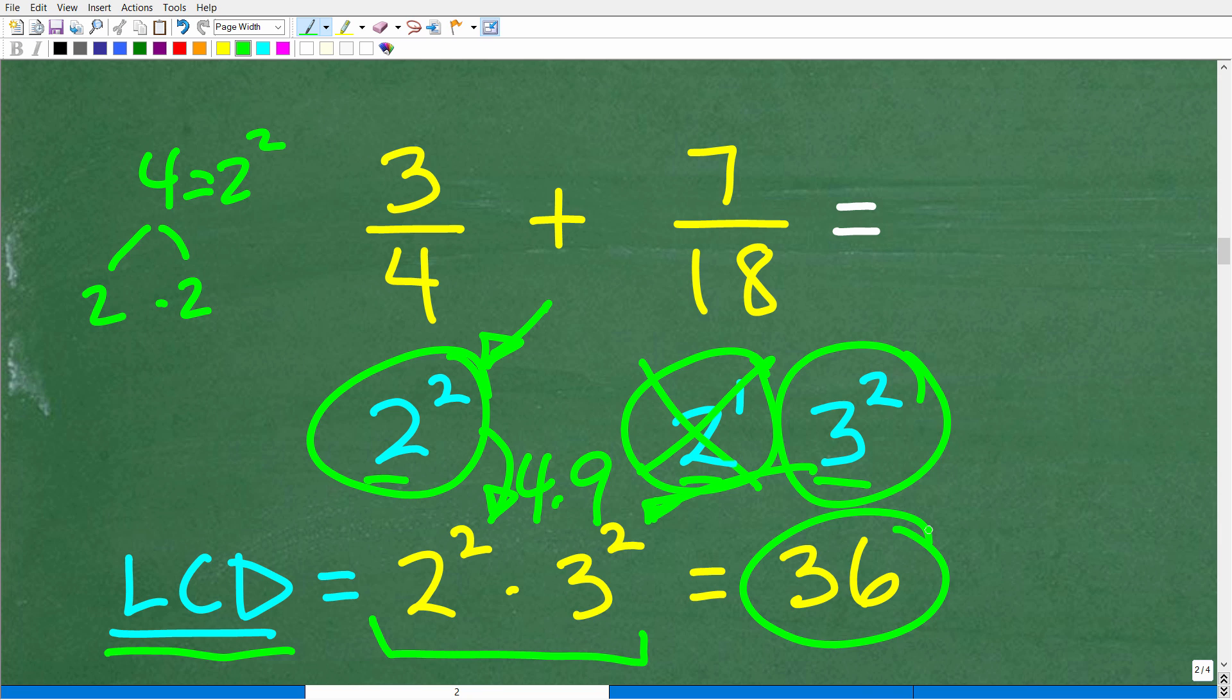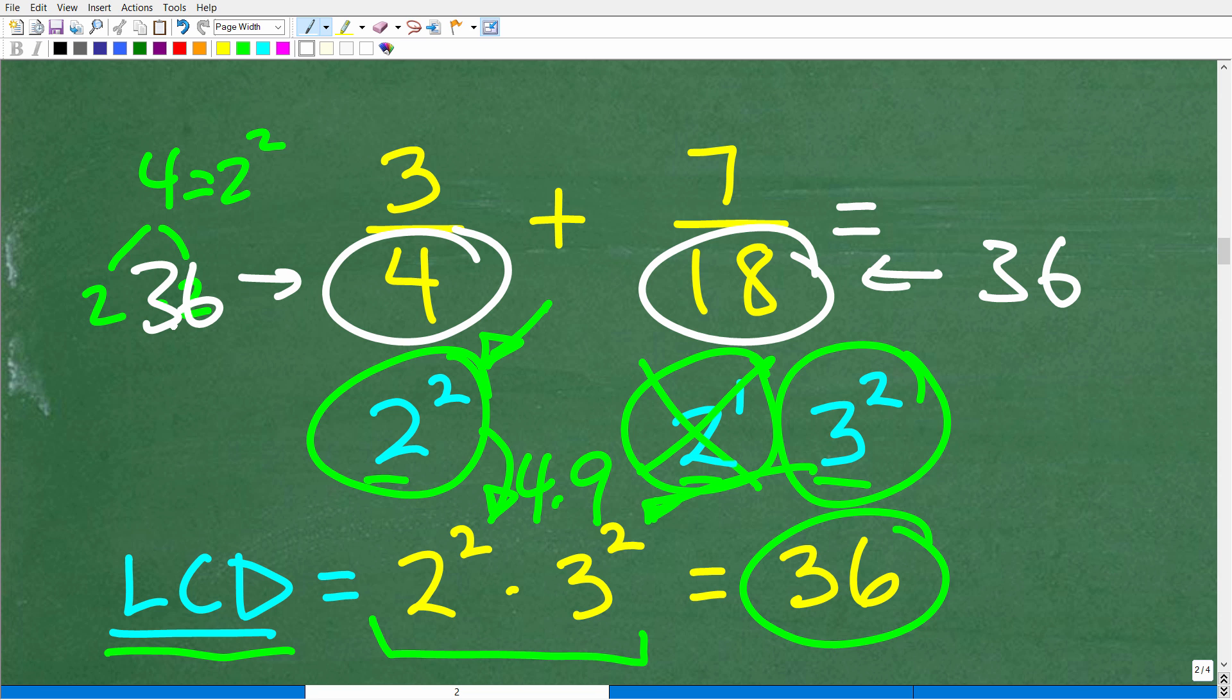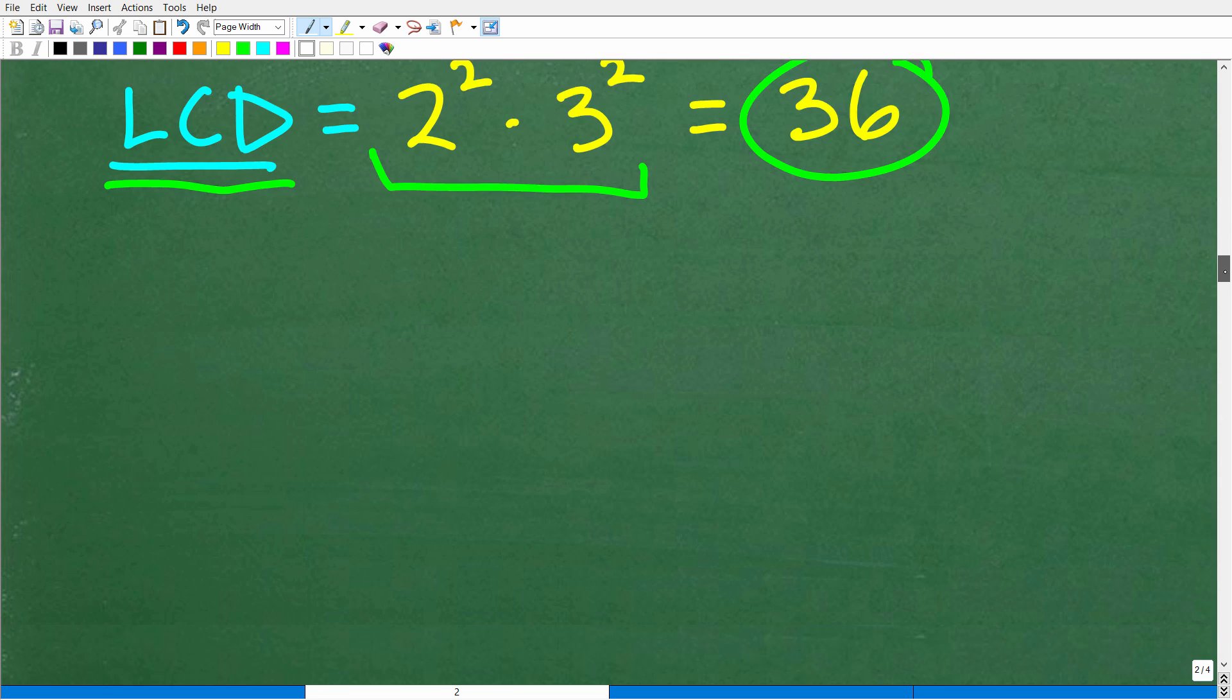So we use this in our LCD. So that's going to be 2 squared. But we need our 3 squared as well because we need all these prime factors represented. So 2 squared is 4, 3 squared is 9, 4 times 9 is 36. This is how you find the LCD. Now, again, a lot of people are not going to do that because they can just determine what the LCD is because these are basic problems. But as the denominators get more challenging, you need to understand this procedure.